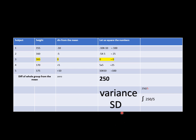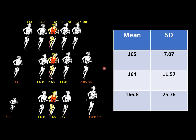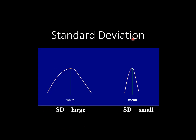In the visual field, if there are changes in just one location, the standard deviation — called pattern standard deviation in the Humphrey — or the variance in the Octopus will be small. But if more areas are depressed, with values away from the rest, the standard deviation will be higher. A high standard deviation or high variance tells us the shape of the field is irregular. Mean deviation gives an impression of field height; standard deviation or variance gives an impression of field shape.